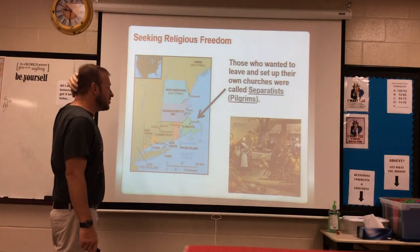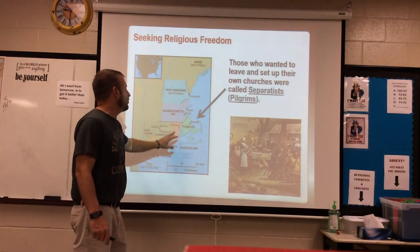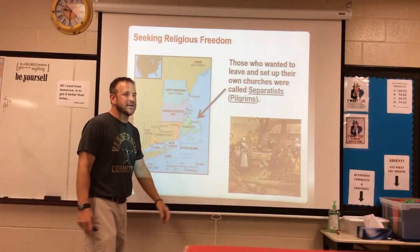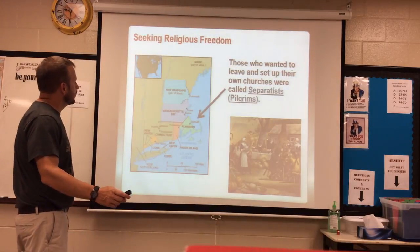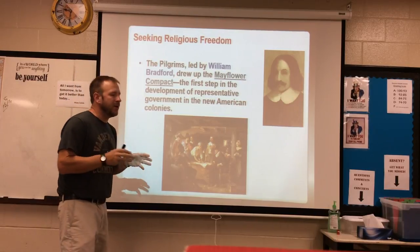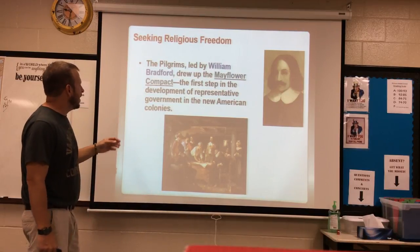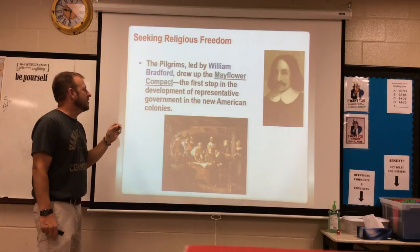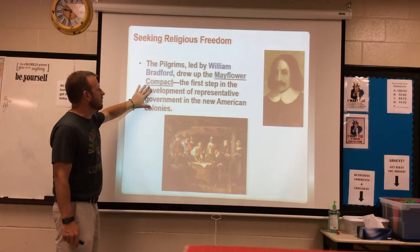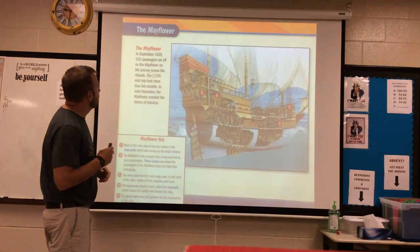Those who wanted to leave and set up their own churches were called separatists — the pilgrims who landed at Plymouth Rock. They named it Plymouth after the port they sailed out of in England. The pilgrims were led by William Bradford. While they were still on the boat, before they even stepped foot on ground, they signed the Mayflower Compact — the first step in the development of a representative government in the new American colonies, just like the House of Burgesses in Jamestown.